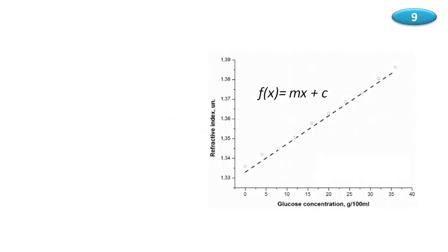Curve fitting. The figure shows the experimental data of refractive index for different concentrations of glucose solution. In this figure, the refractive index varies from 1.33 to 1.39, and the glucose concentration varies from 0 to 40 grams per 100 ml.